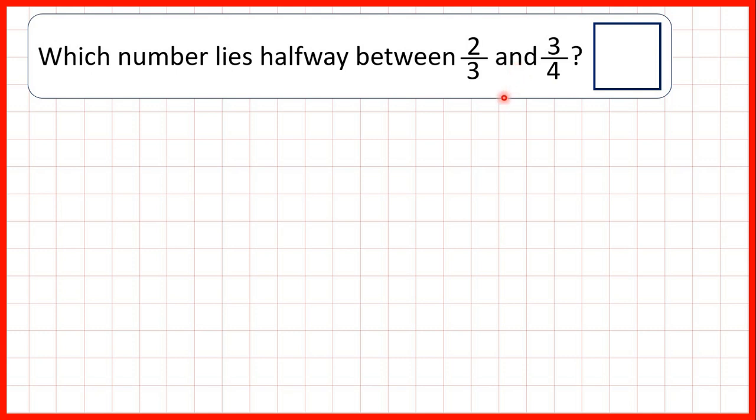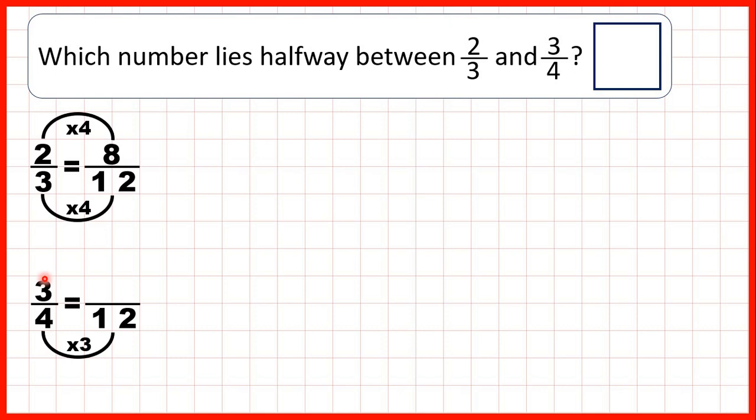The lowest common multiple of three and four is twelve, so we can find fractions equivalent to two-thirds and to three-quarters which both have a denominator of twelve. Three times four is twelve, two times four is eight, four times three is twelve, three times three is nine.